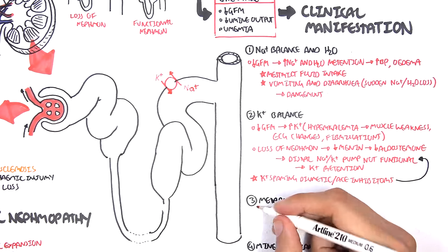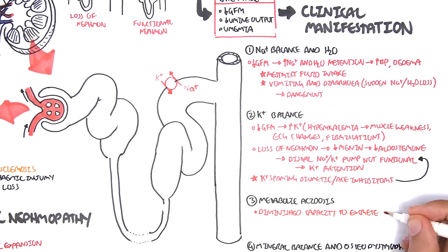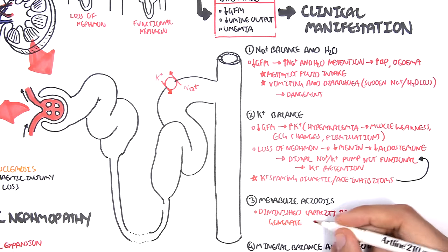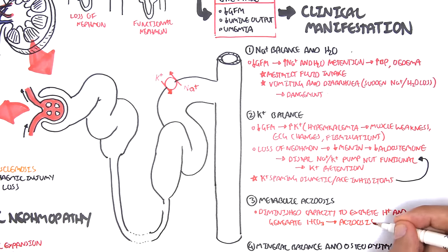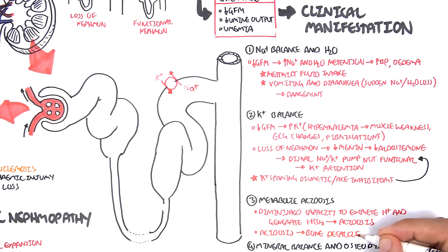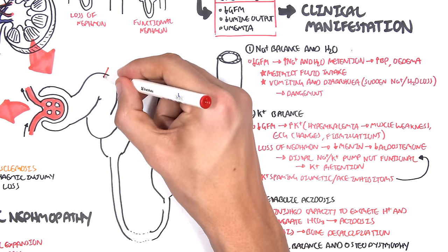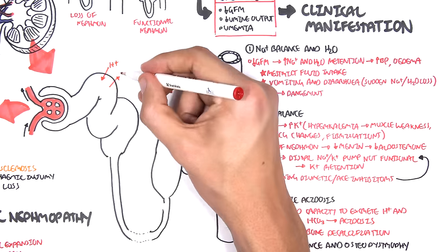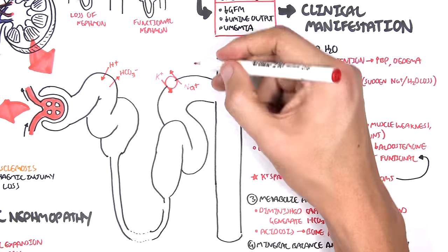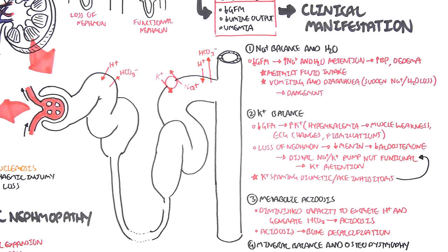Regarding metabolic acidosis: in chronic kidney failure there is diminished capacity to excrete hydrogen ions and to generate bicarbonate, which leads to acidosis. Acidosis can cause bone decalcification among many other effects. Normally the nephron maintains the pH of the blood by producing bicarbonate or secreting hydrogen ions as necessary.